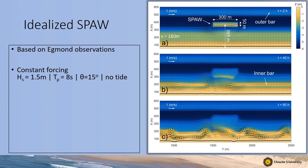We used the Egmond observations to set up the model. For this talk I'd like to focus on a single model run with an idealized spore, used to study the processes involved in onshore spore migration and its impact on inner shore morphodynamics. We used a longshore-uniform bathymetry with an inner bar and outer bar, and placed a spore with dimensions of 300 meters alongshore and 50 meters cross-shore at an offshore distance of 365 meters. We used a constant forcing of 1.5-meter significant wave height, peak periods of 8 seconds, an angle of wave incidence of 15 degrees, and no tide.